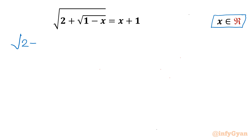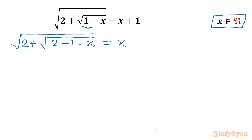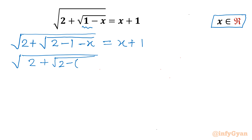I will write my radical equation as square root of (2 plus square root of (2 minus (1 minus x))), which simplifies. The right hand side is x plus 1. Now I will use substitution — we can consider x plus 1, suppose it is equal to a.